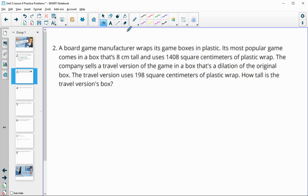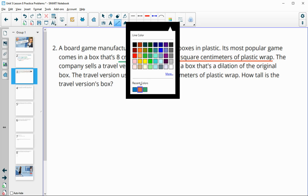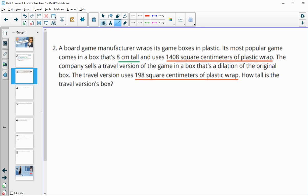Number two says a board game manufacturer wraps its games in plastic. Most popular games come in a box that's 8 centimeters tall and uses 1,408 square centimeters of plastic wrap. The company sells a travel version that uses 198 square centimeters of plastic wrap. When we take the travel size area versus the original area, that will help us get our K squared since we're comparing areas.